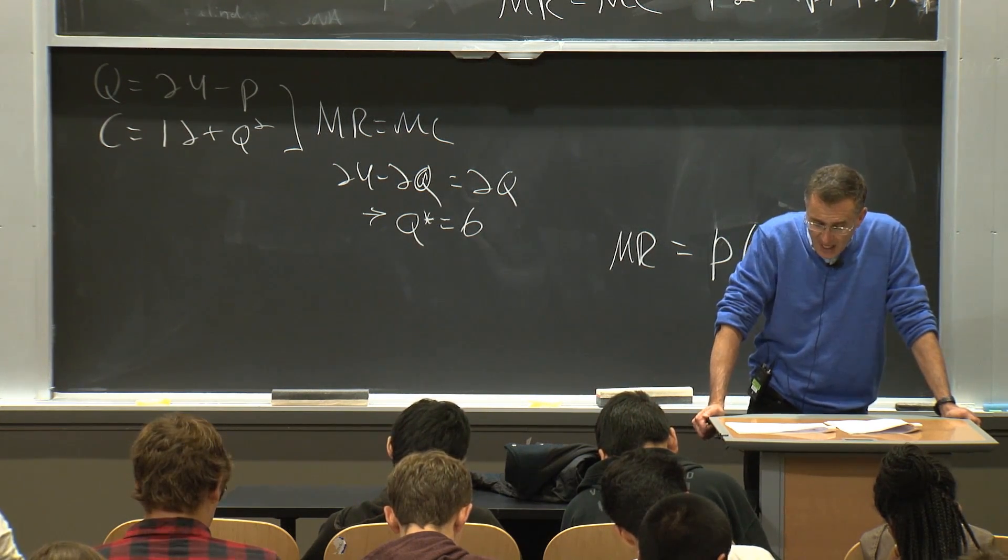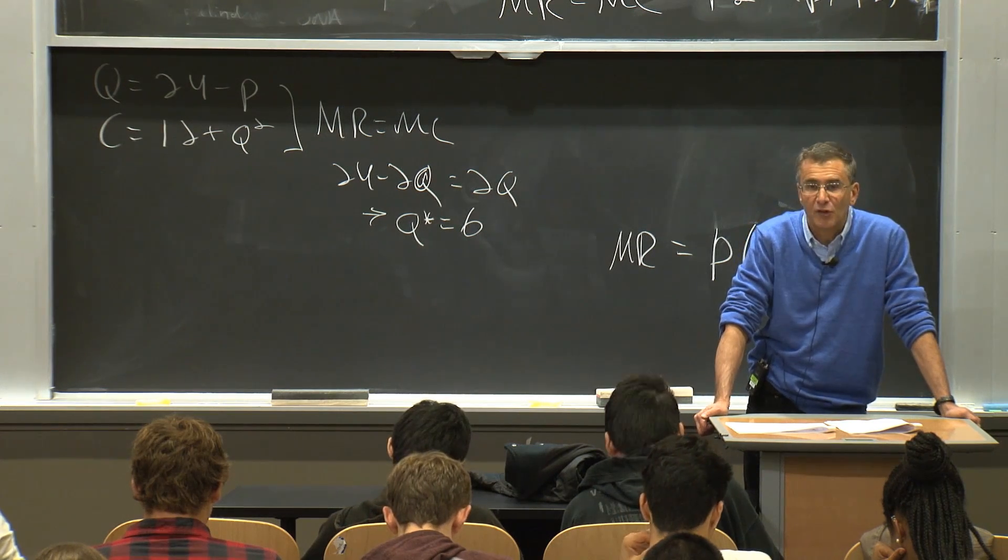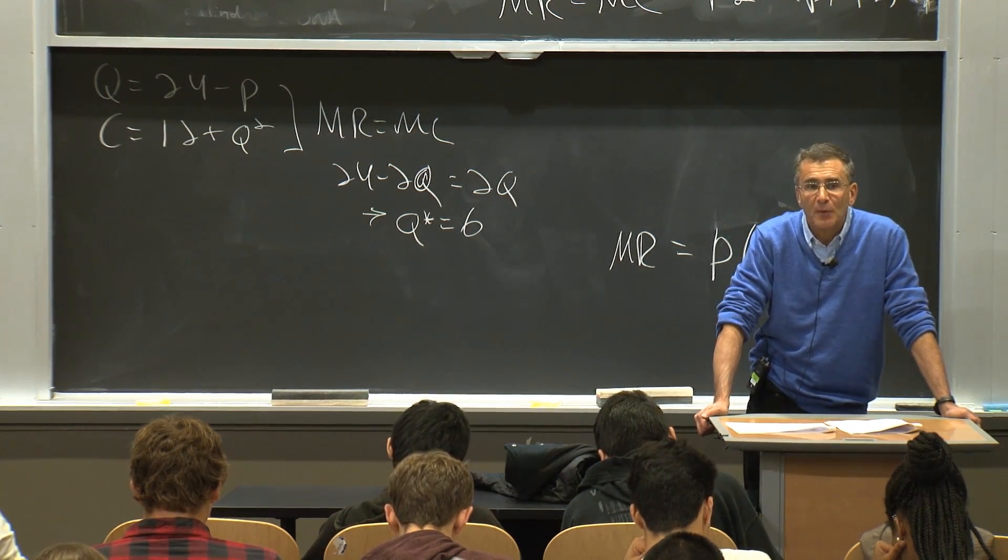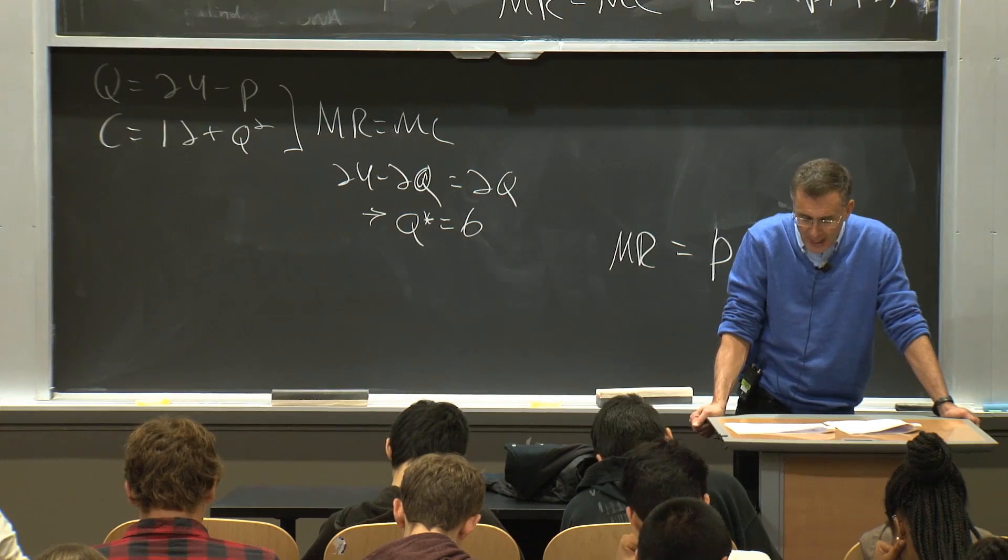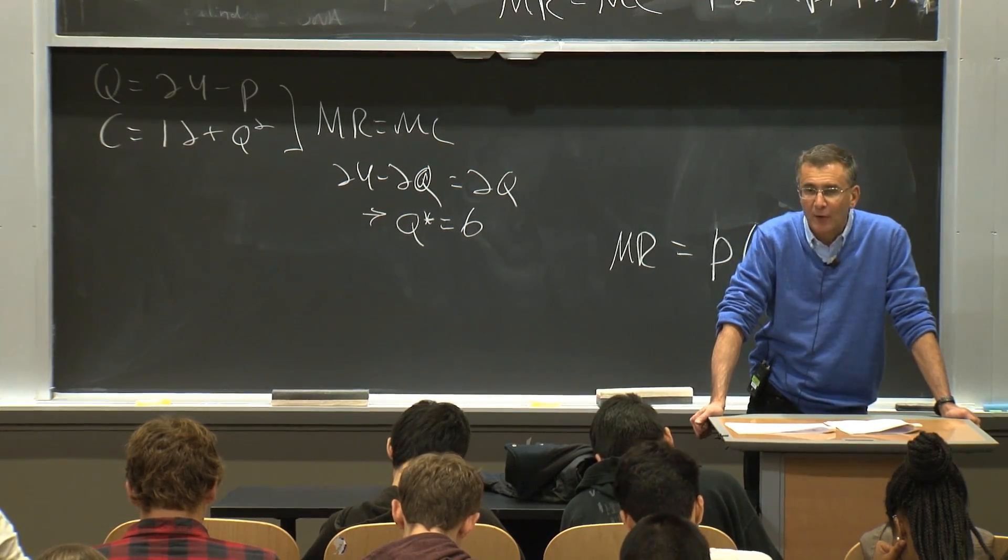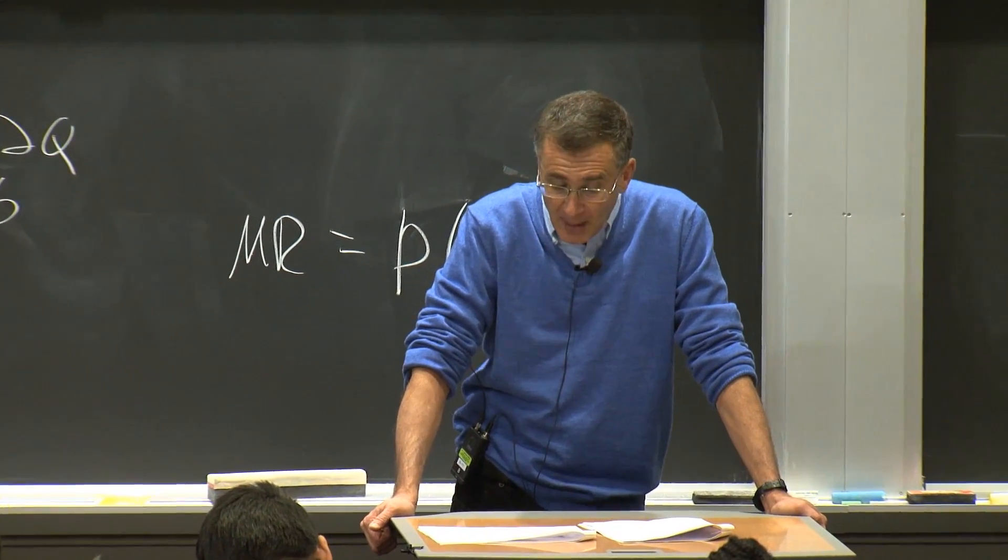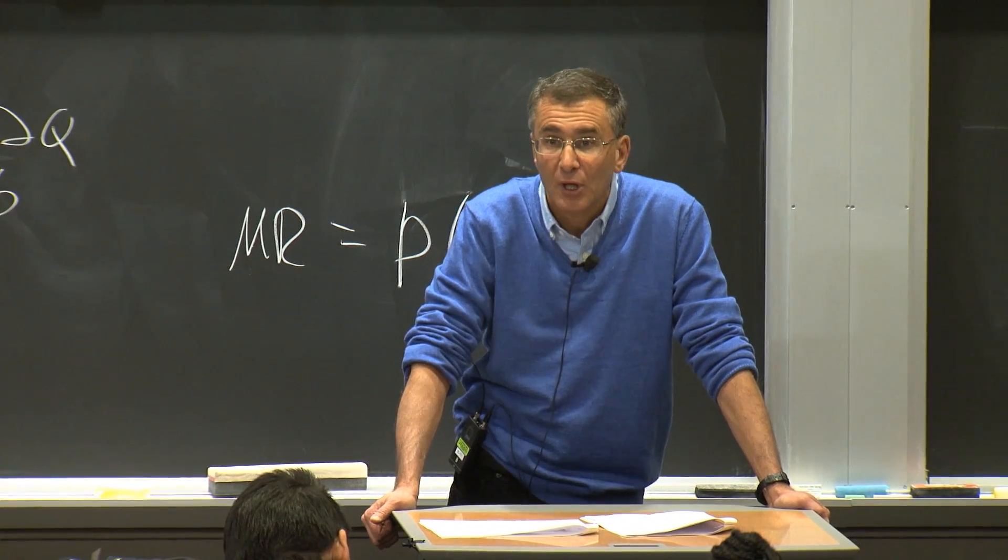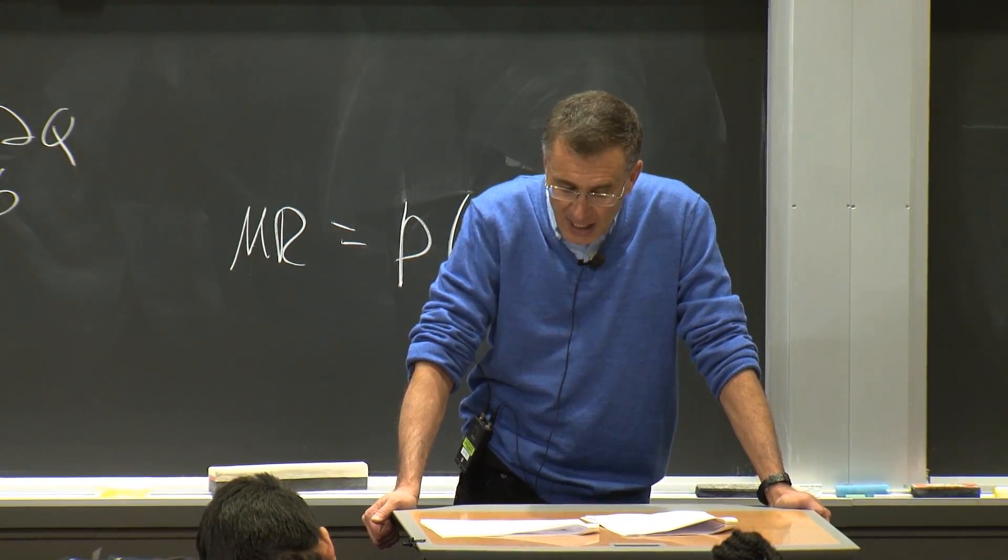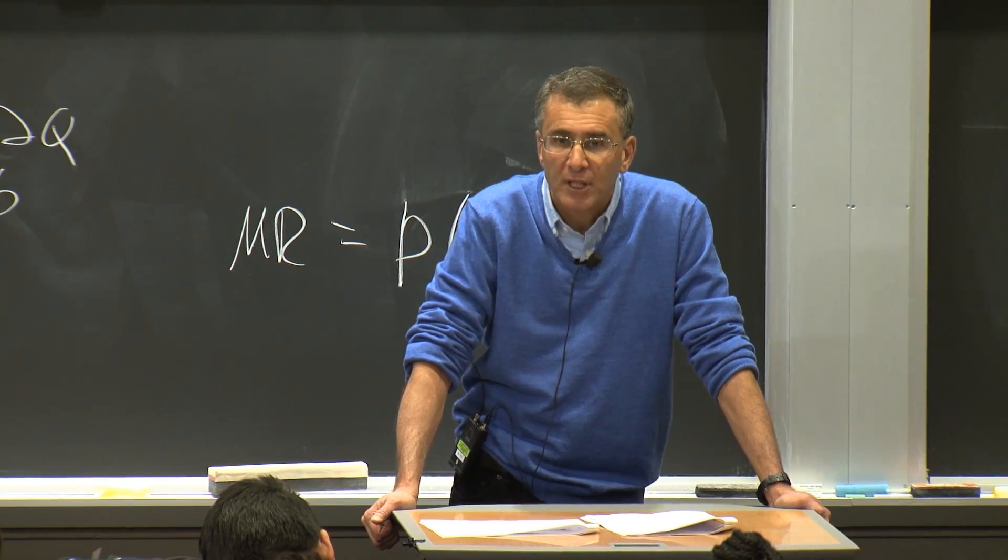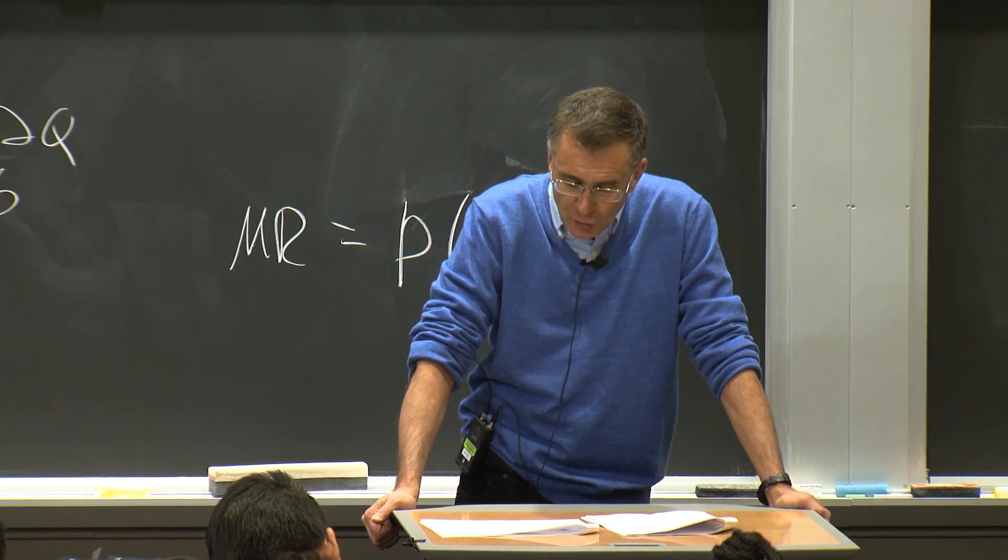Now, we can see that if this is a perfectly competitive firm, would they produce more than 6 units or less than 6 units? Look at this graph. If this is a perfectly competitive firm, well, first of all, they wouldn't face downwardly sloping demand. But if this was not a monopolist, this is a firm in a competitive market, and they were facing a downward sloping demand, they'd produce more, because they'd set marginal cost equal to price. And they would end up choosing a higher point. But the monopolist does not. The monopolist chooses 18.